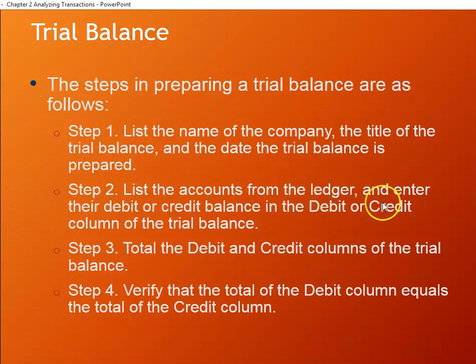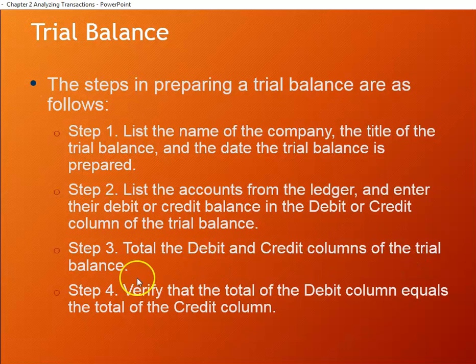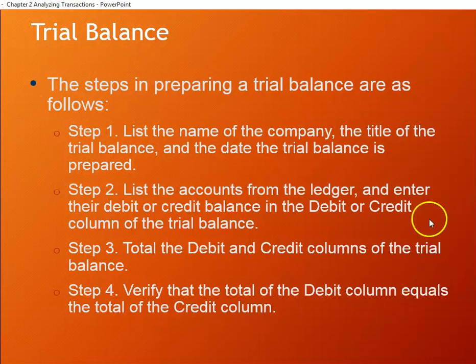Step two: list the accounts from the ledger and enter their debit or credit balance in the appropriate column. Again, in a computerized setting, any account with a balance will automatically appear. Step three: total the debit and credit columns — this is done automatically. Step four: verify the totals are equal — and they will be, otherwise you wouldn't have been able to make the journal entry in the first place.